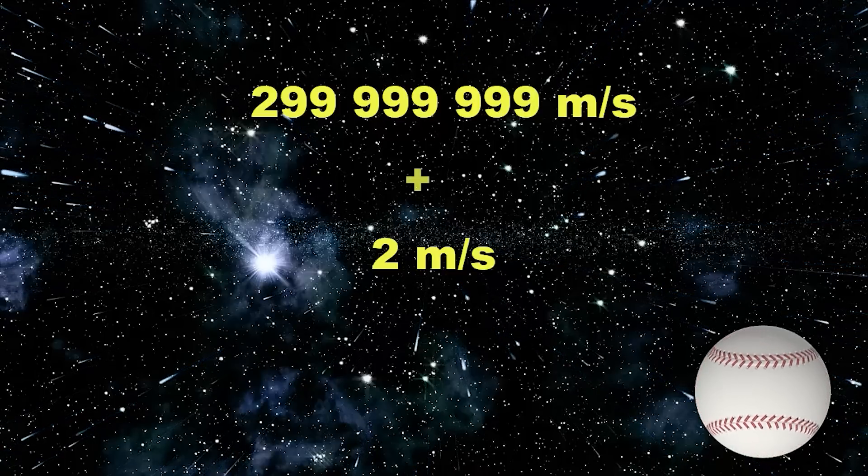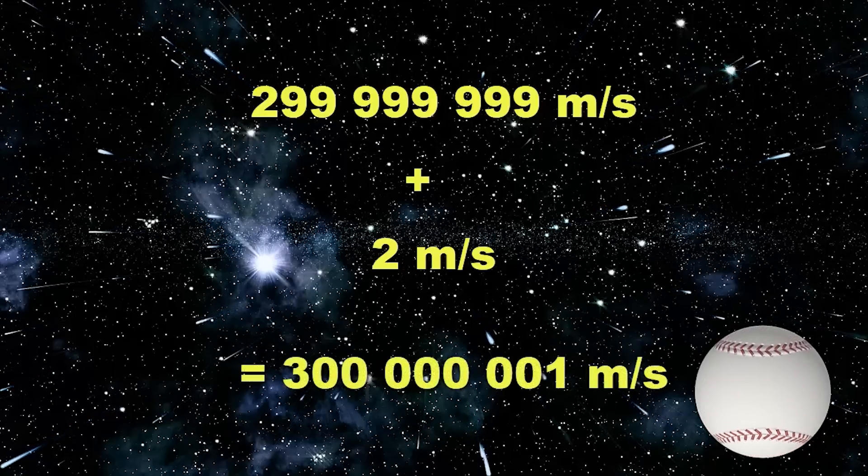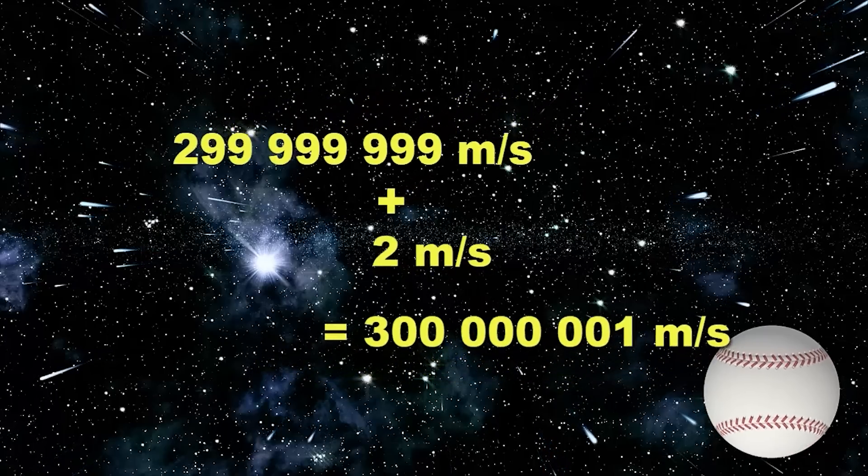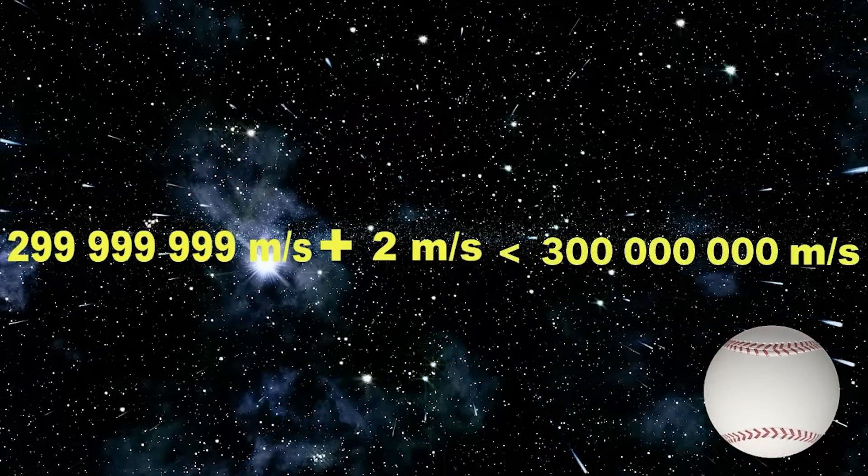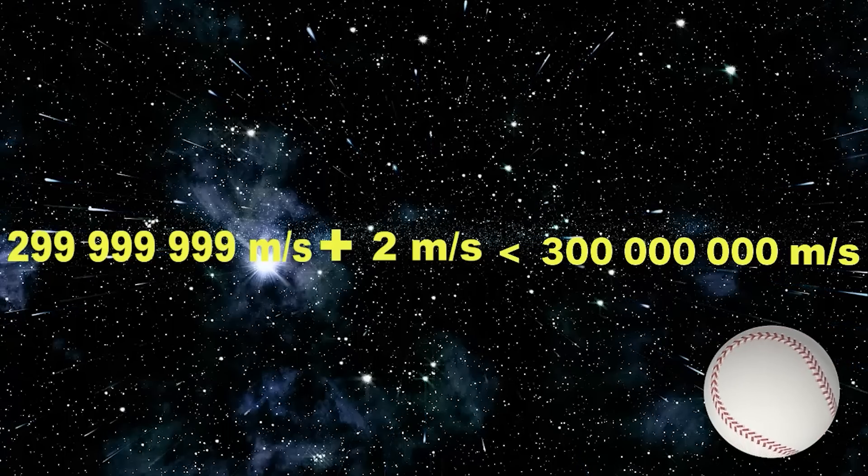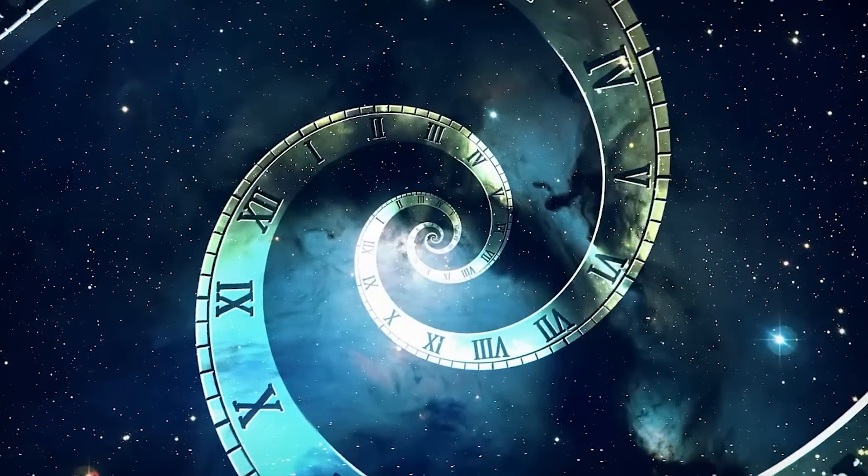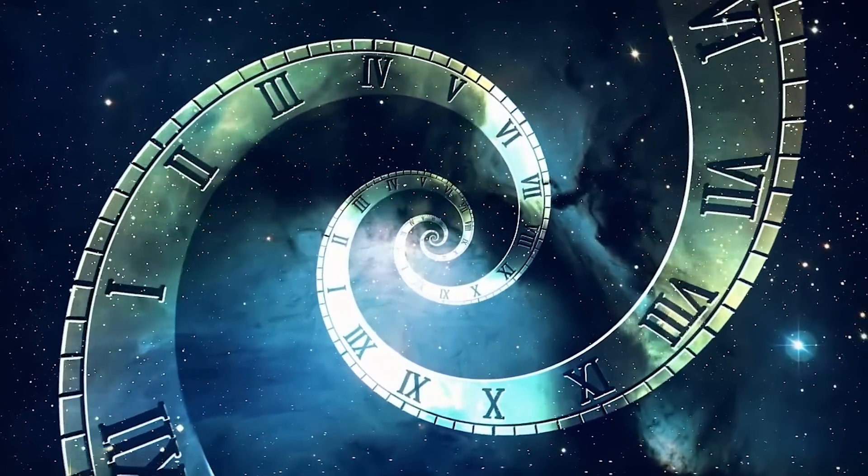Surely the speed of the ball added to the speed of the car surpasses the speed of light? What if I told you the speed of the ball combined with the speed of the car is still less than the speed of light? But how is this possible? The universe reacts in a phenomenal way to say the least.